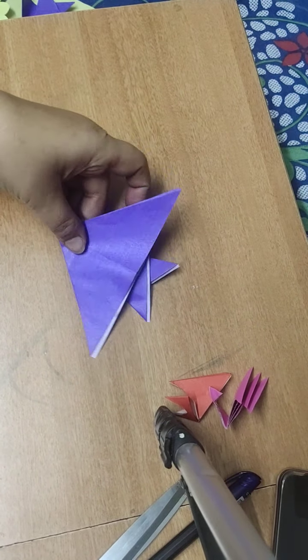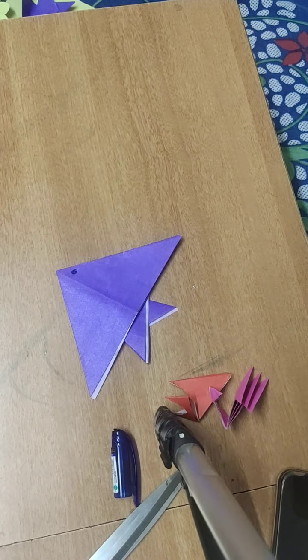Then what will we do? We will open it again. Here you are getting this, you are getting this slanting line. Now you will fold half of it. You will make a fold half to it, not on complete fold, half to it.